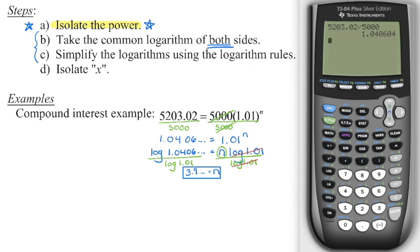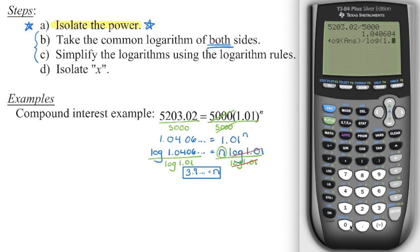For the calculator steps: first, isolate the power by dividing out 5,000. Then press log, press second function, and then press the negative key — it says answer above there — which substitutes that whole value in. Close the bracket, divide by the logarithm of 1.01, and you'll get approximately 3.9.